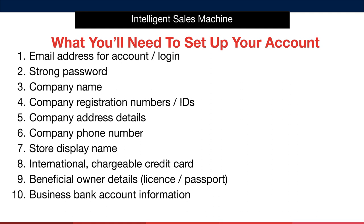You need a strong password — you can use passwordgenerator.net if you want a randomised, incredibly strong password. You need your company name, your company registration numbers and IDs — you'll receive all of this from the accountant who set up your company. You need company address details; you may have two companies if launching in both markets. You also need a company phone number.